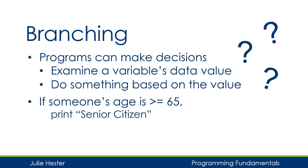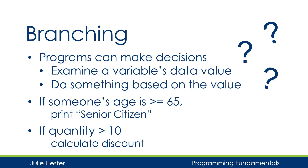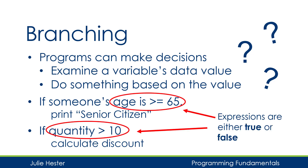For example, we can look at somebody's age and compare it to 65. If the age is greater than or equal to 65, we'll print senior citizen; otherwise, we won't. Or, if we have a number like quantity, we can compare it to 10 and if it's greater than 10, calculate a discount. In both scenarios, we have an expression comparing one thing to another, and that expression is either going to be true or false.